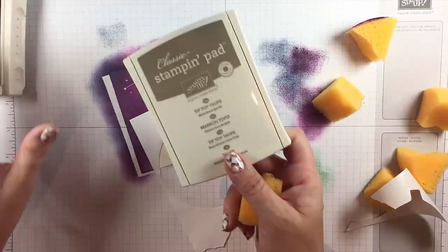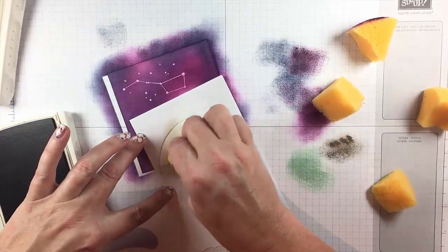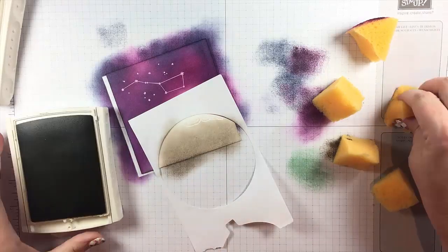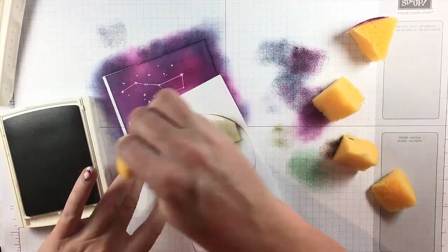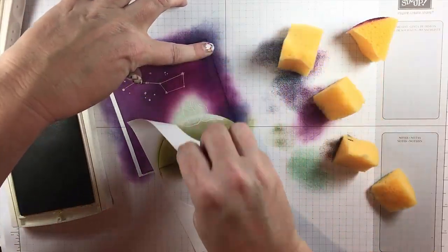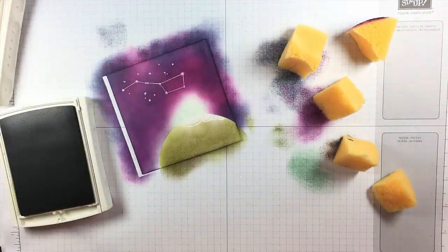It's really the same for the sky too. I could have just made it all dark blue but I don't think it would be as interesting. The second color was Tip Top Taupe and this is Old Olive, and you can see how it just adds a little bit of interest down on the earth.